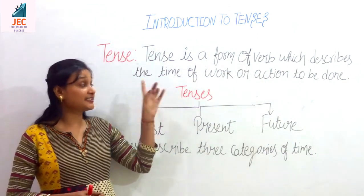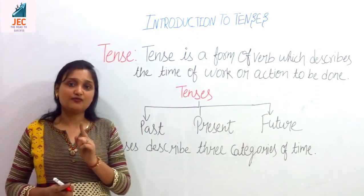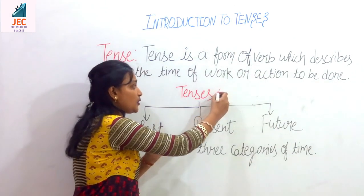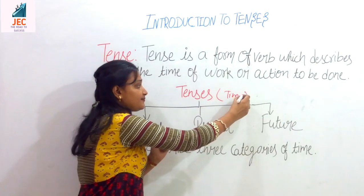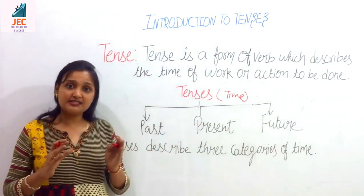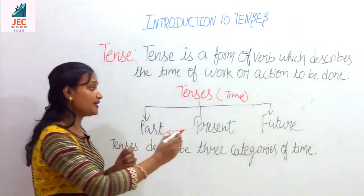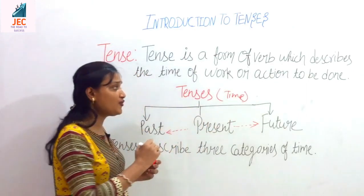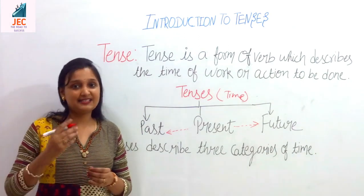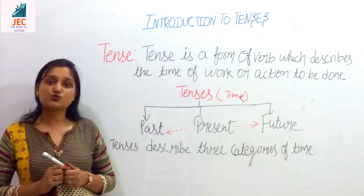Tense describes the time of work. On the basis of time, there are three types of tenses: past, present and future. Tenses describe three categories of time. Whatever is current is present — वर्तमान. If we go to the past side, we get past — जो हो चुका है. And if we go forward, we get future — आने वाला कल. So there are three types of tenses. But in English grammar we say there are twelve types of tenses.